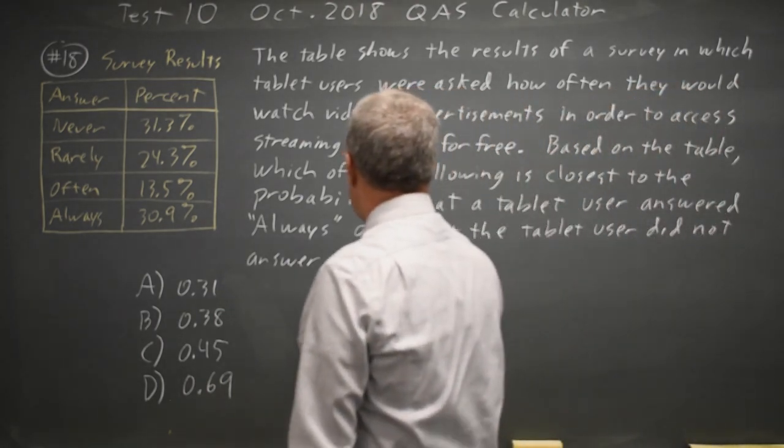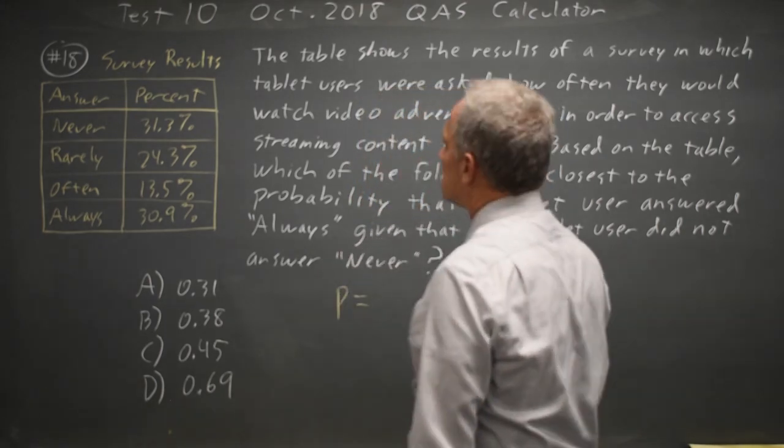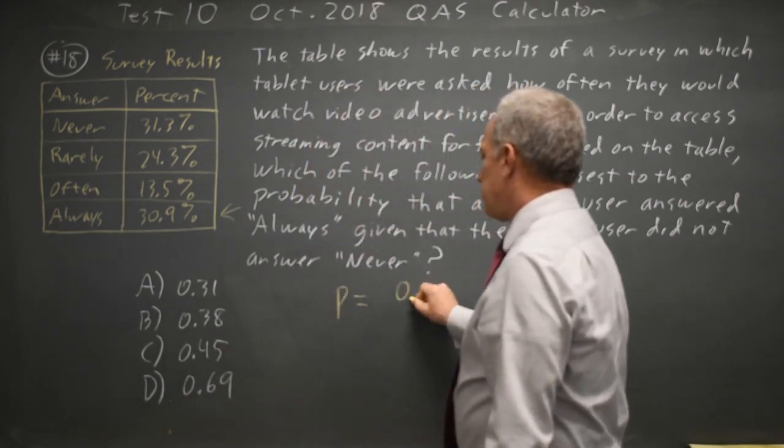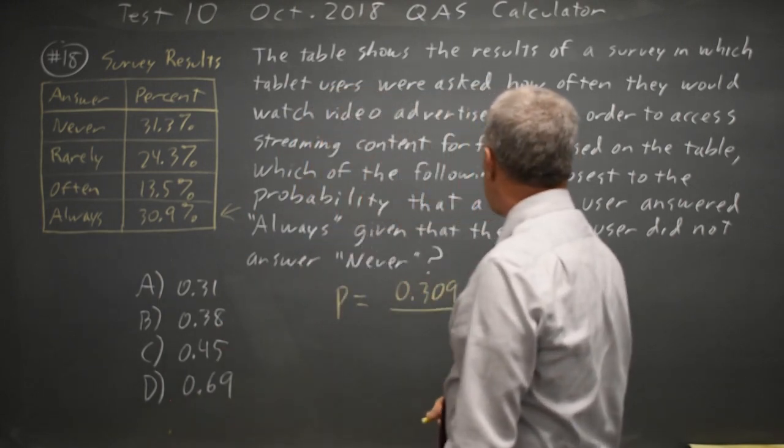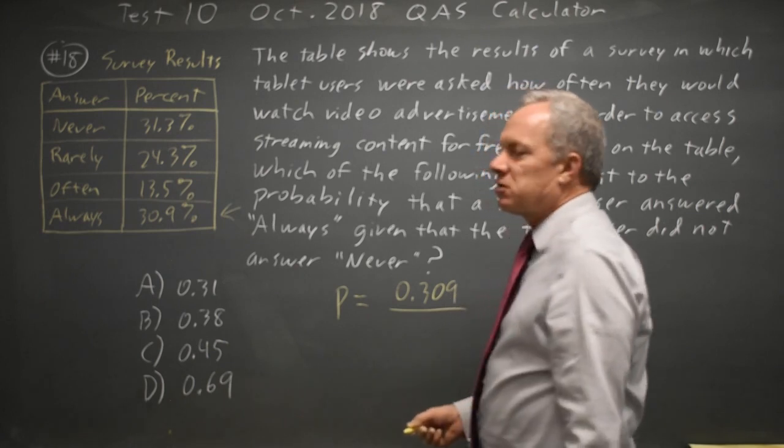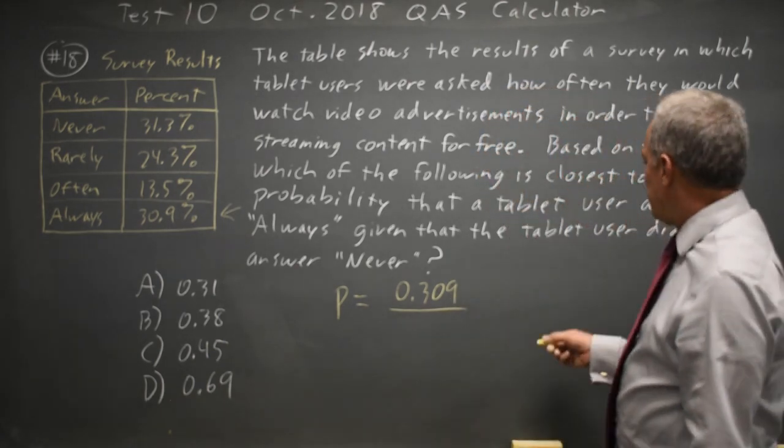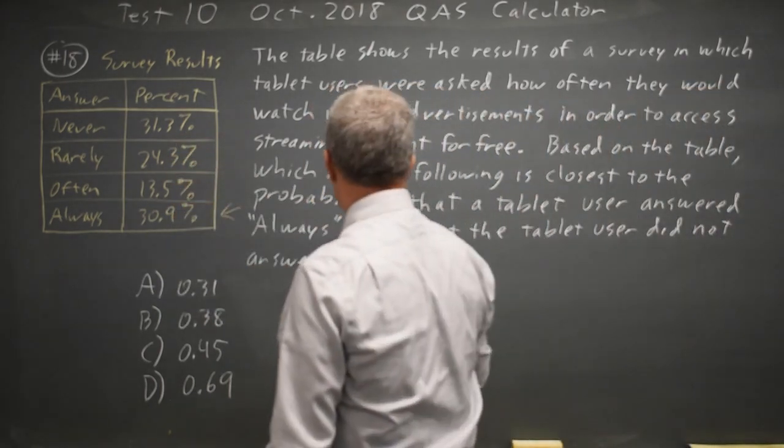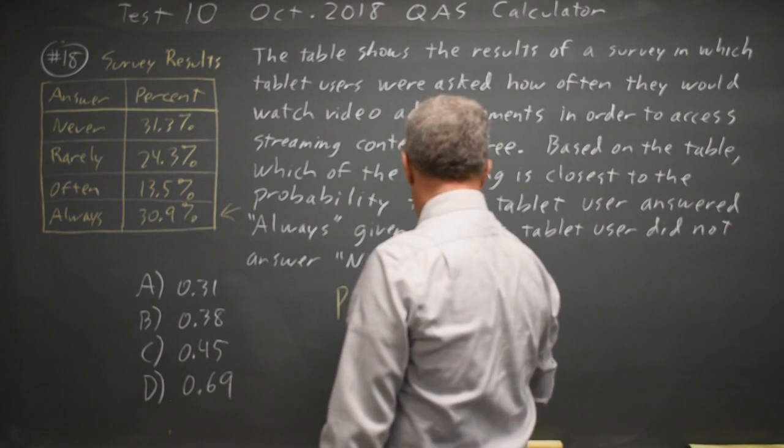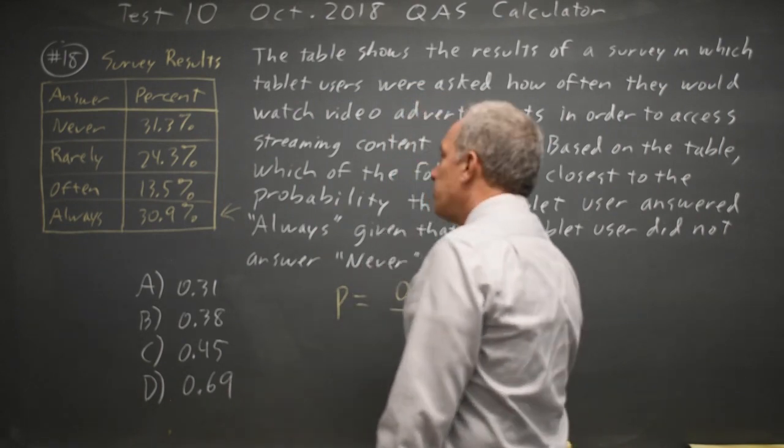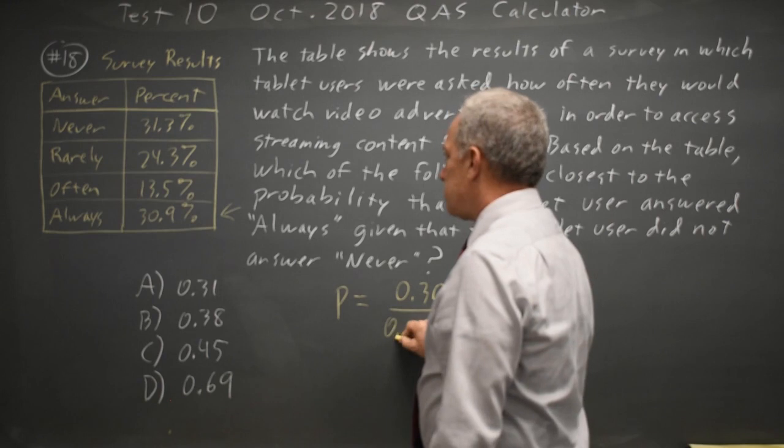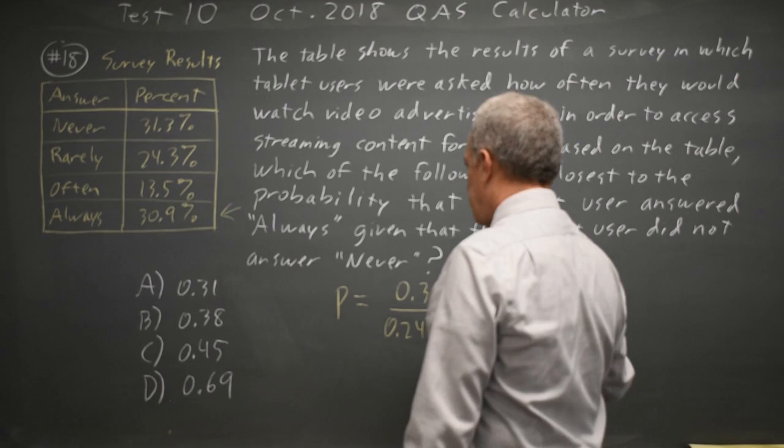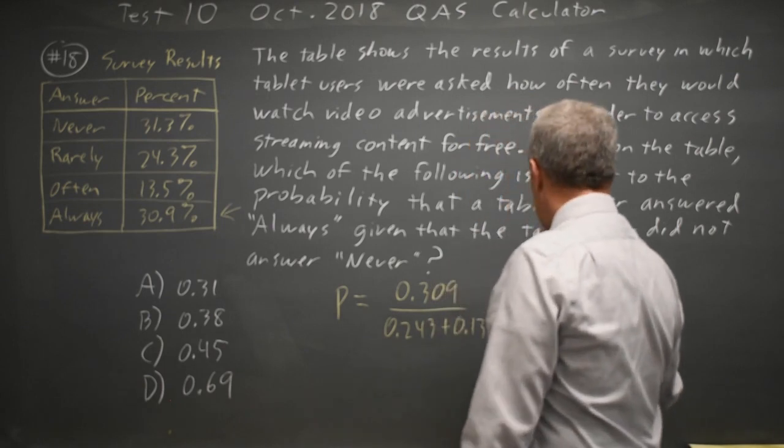So this probability has a numerator which is the successful outcomes, the always, which is 0.309 or 30.9%, and a denominator which is all outcomes we're considering. And since it's given that the user did not say never, it's everything else, which is 1 minus 0.313, or you can write it as 0.243 plus 0.135 plus 0.309.